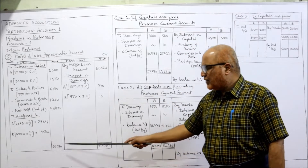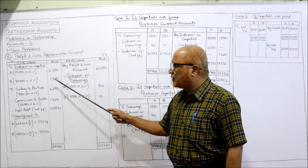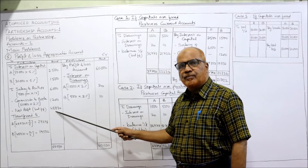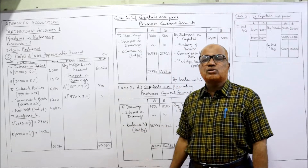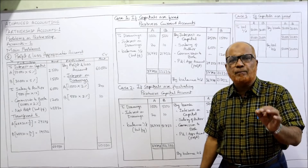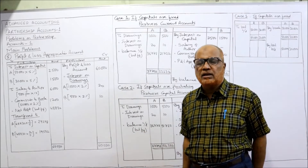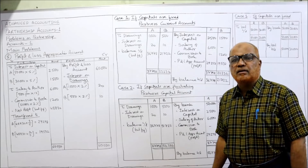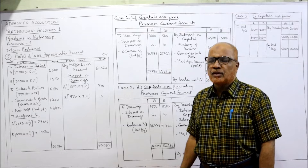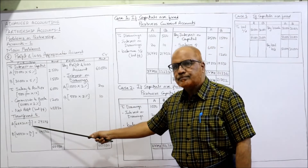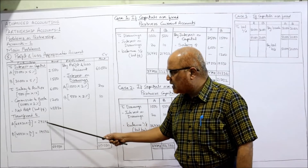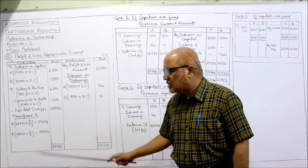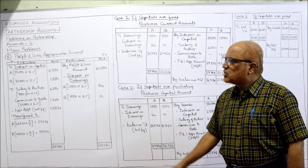Taking the total on the credit side: 60,000 + 30 (interest on drawings) minus 2,500 minus 1,500 minus 6,000 minus 1,200, the divisible profit is 48,830. This profit is shared in the ratio 3:2, so Author gets 3/5 = 29,298 and Book gets 2/5 = 19,532.